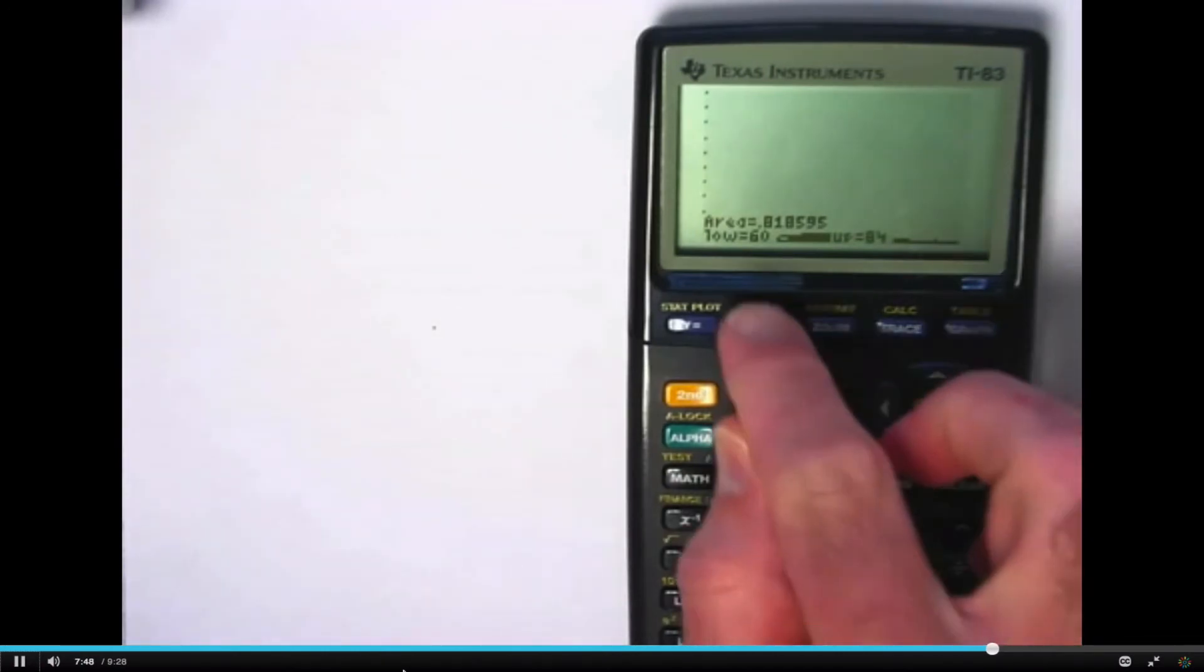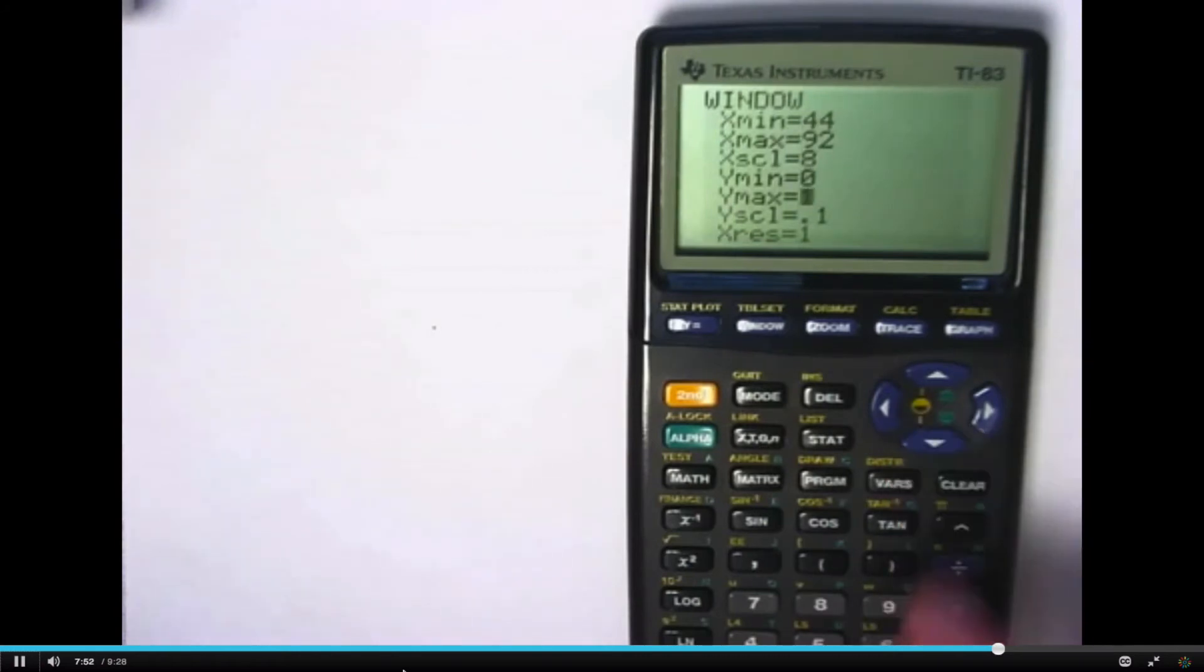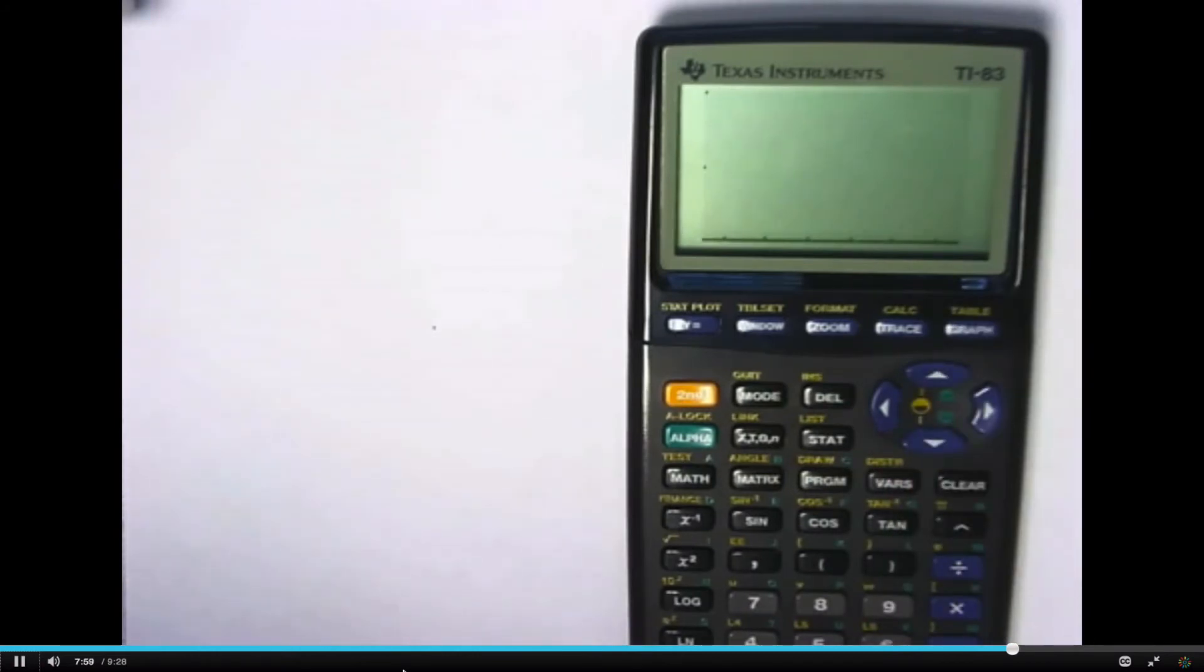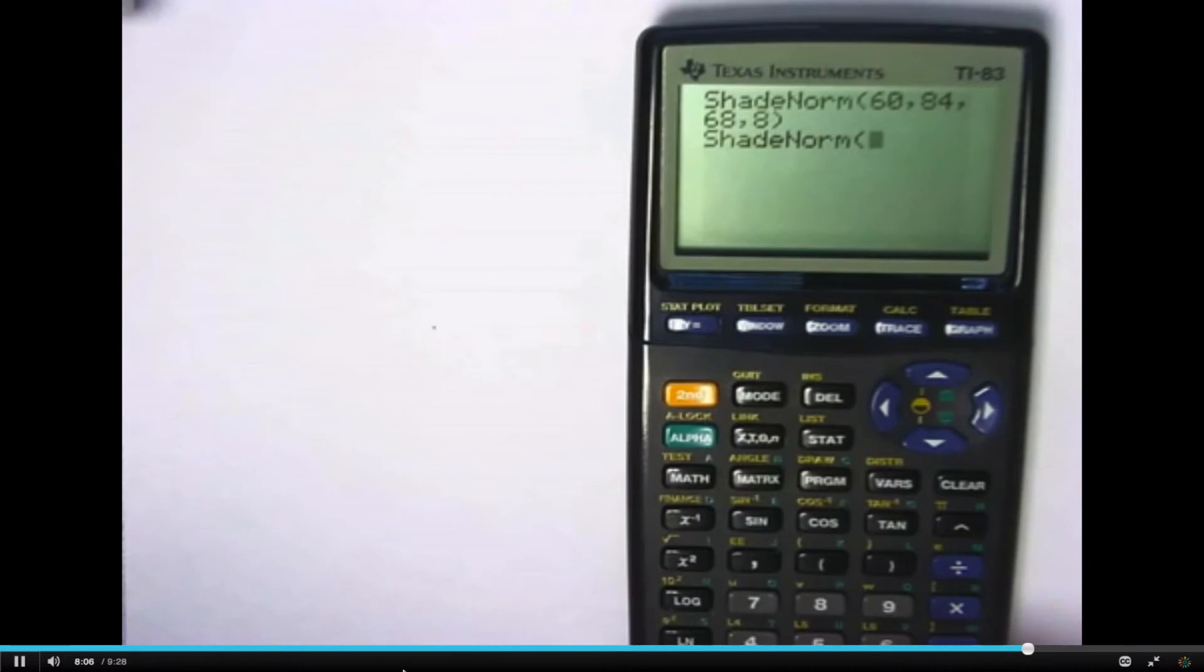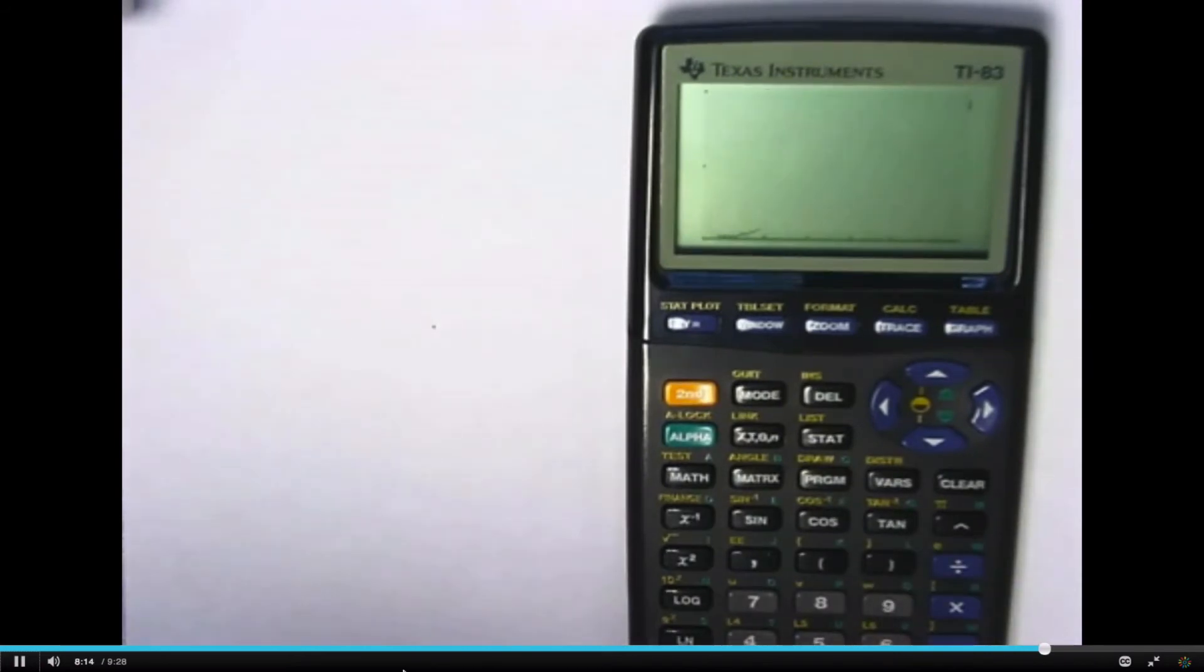Let me change the window. Make y go up to, say, 0.2. I think we have to go back and do the command again. Okay, shade norm, 60, 84, 68, 8. Let's see it better here. There's the area, yes, about 0.8186 is a more accurate approximation.